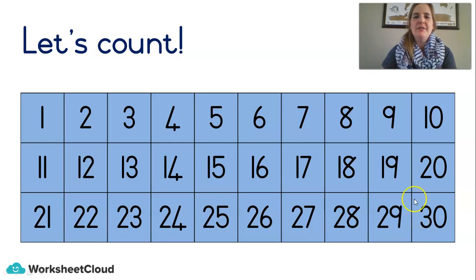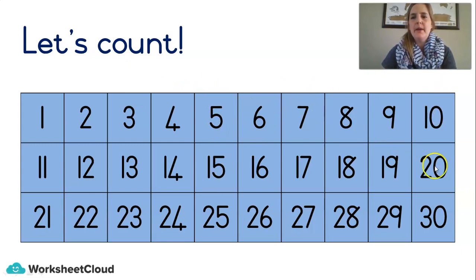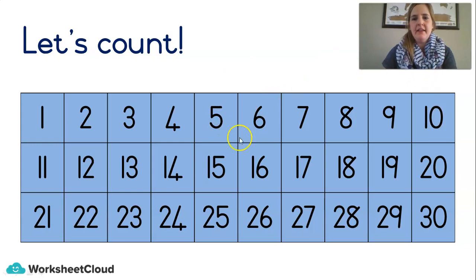Very good. Let's count in fives. 5, 10, 15, 20, 25, 30. Well done. Let's do it again. 5, 10, 15, 20, 25, 30. Well done.